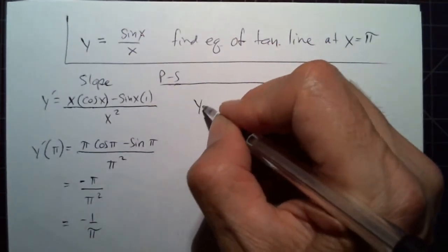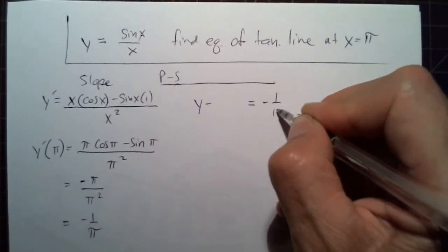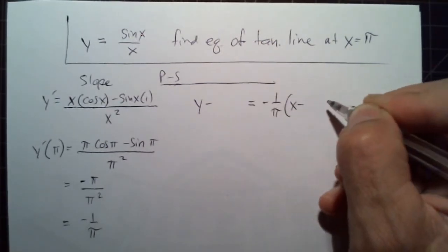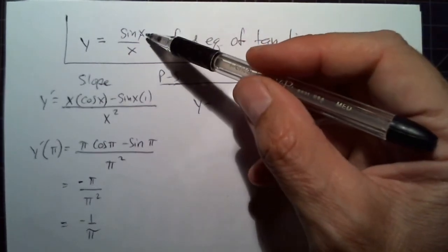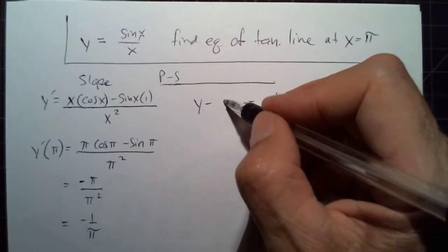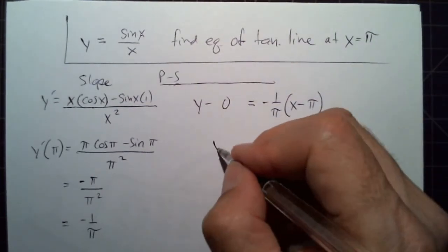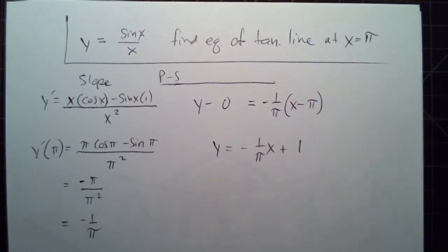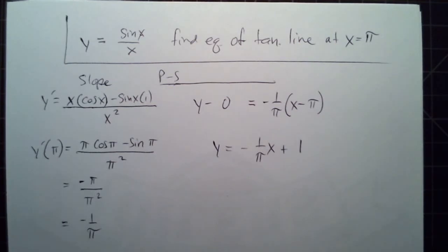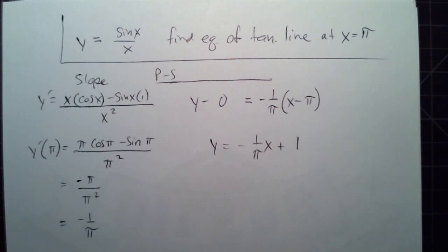Using point-slope form: y minus y₁ equals m times (x minus x₁). If we put pi in for x₁, that gives us 0 for the y₁ term. We get the equation of the tangent line, and I think we can stop there.